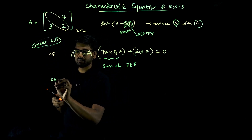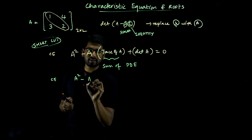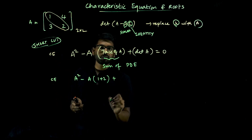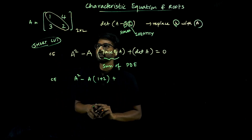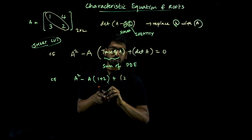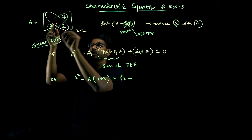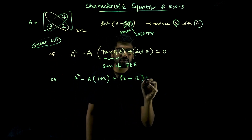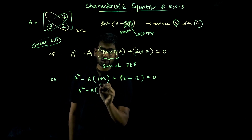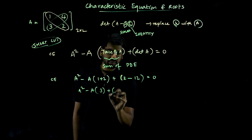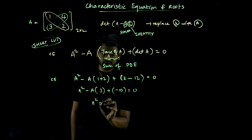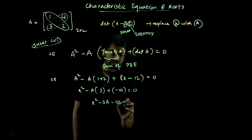The characteristic equation is: lambda squared minus lambda times trace of A plus determinant of A. What is trace of A? Trace of A is 1 plus 2. What is determinant of A? Determinant of A is the diagonal product 2 into 1, which is 2, minus 4 into 3, equal to zero. So lambda squared minus lambda: 1 plus 2 is 3, and 2 minus 12 is minus 10 equals zero. Therefore lambda squared minus 3 lambda minus 10 equals zero.